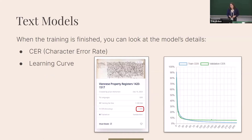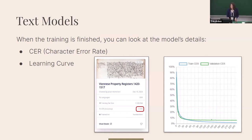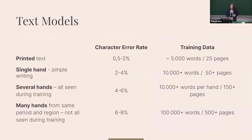When training is finished, you can check the model's details in the Transkribus web app — including the character error rate and the learning curve. For example, this model has a character error rate of 1.5 percent, which is quite good, and the learning curve also looks fine.